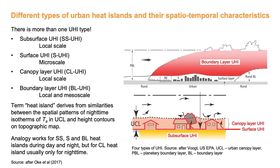It is a not always appreciated fact that there are different types of urban heat islands and each type has its own characteristics, its own behavior, scale dependence and hence method of observation and also range or scope of application. A simple classification is given here where four types are distinguished as illustrated from bottom to top on the schematic on the right.